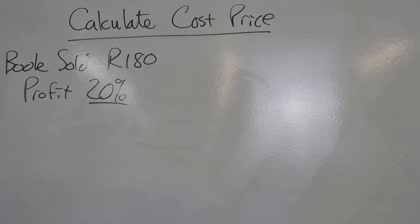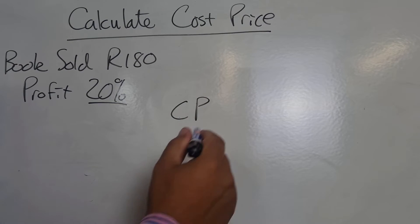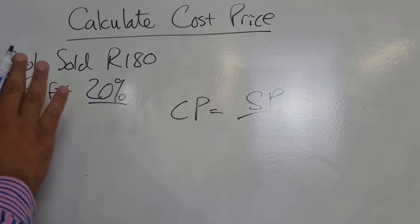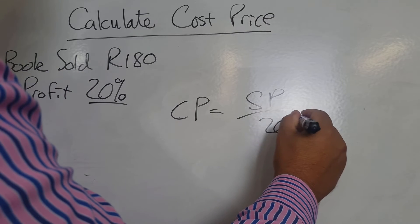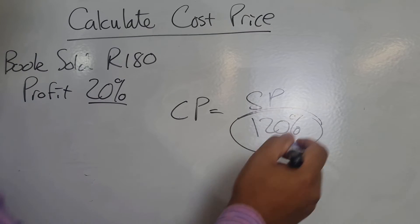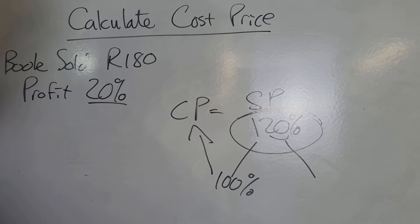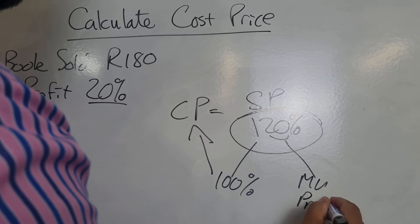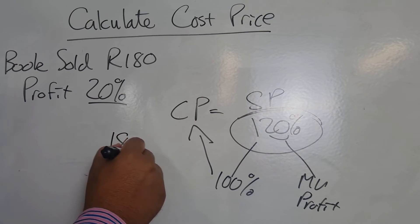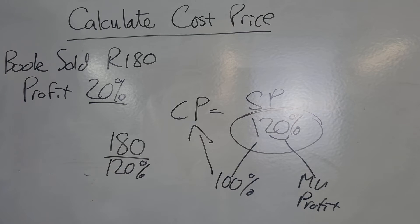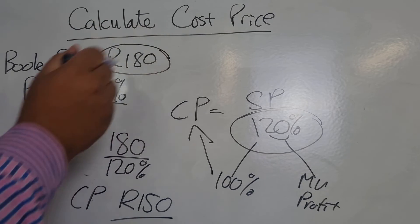Now they want us to calculate the cost price. To get the cost price, what I'm going to do is take the selling price and divide that by the profit — but this profit has to be based on the cost price. So it's not going to be 20 percent, it's going to be 120 percent, because the 100 percent represents the cost price and the 20 percent represents the markup or profit. So I've got 180 divided by 120 percent, and I end up with 150 rand as my cost price.